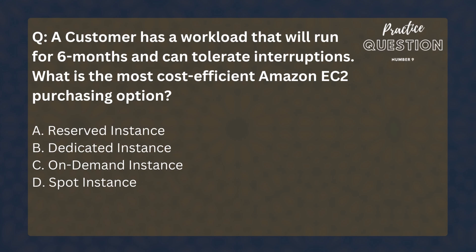A customer has a workload that will run for six months and can tolerate interruptions. What is the most cost-efficient Amazon EC2 purchasing option? Options: Reserved Instance, Dedicated Instance, On-Demand Instance, Spot Instance. It is important to look for keywords in the question. Since the workload will run for only six months, reserved instances cannot be the right answer. We are looking for the most cost-efficient option — it is Spot Instances that can give us the biggest discount, and we can use it because the workload can tolerate interruptions.